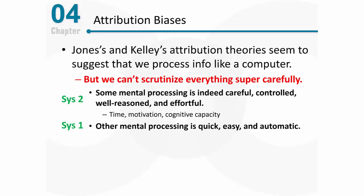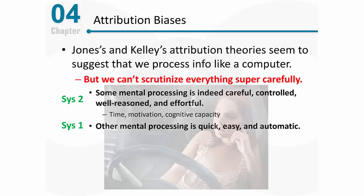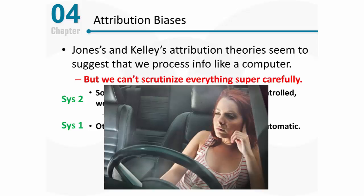That's the distinction between System 1 and System 2 processing. System 1 processing is simply very quick, very easy, very automatic, and System 2 processing is much more well controlled, but it requires a lot more cognitive resources. You can see the distinction pretty easily if you've been driving previously where you're kind of daydreaming, and you realize this incredible task of driving a car that really requires a lot of attention and effort can be done with very little cognitive resources.